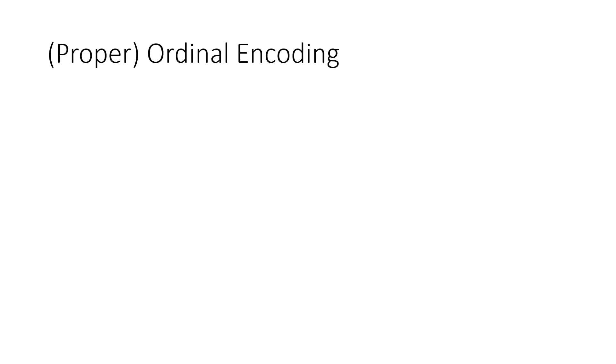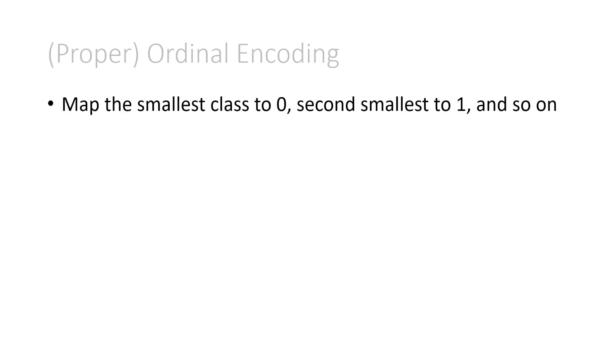So a proper ordinal encoding would preserve the order that's present in the classes. The way to do this is map the smallest class to 0, the second smallest class to 1, and so on. So in this example, small is 0, medium is 1, large is 2, and if you had an extra large, that would go to 3, and so on.